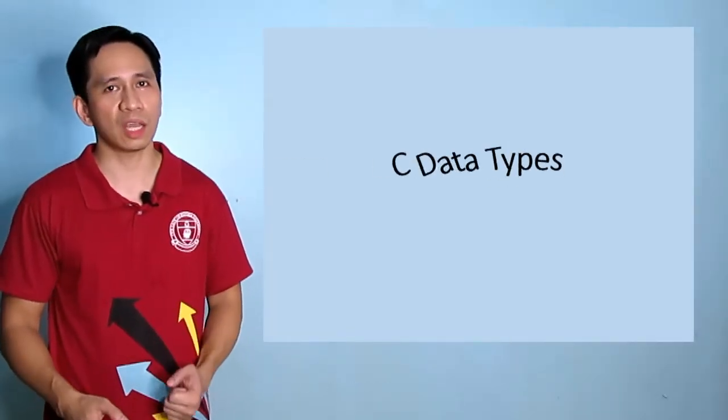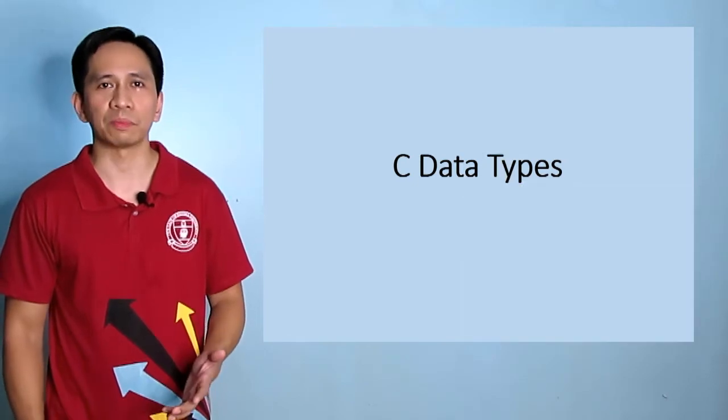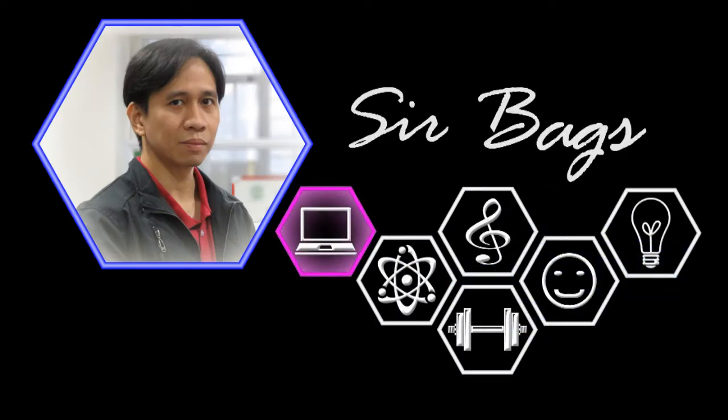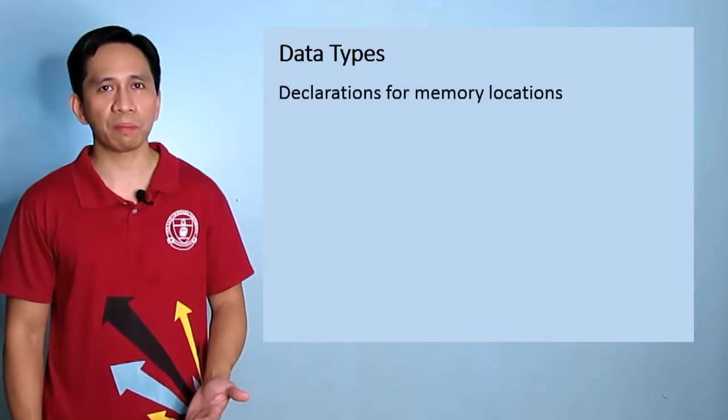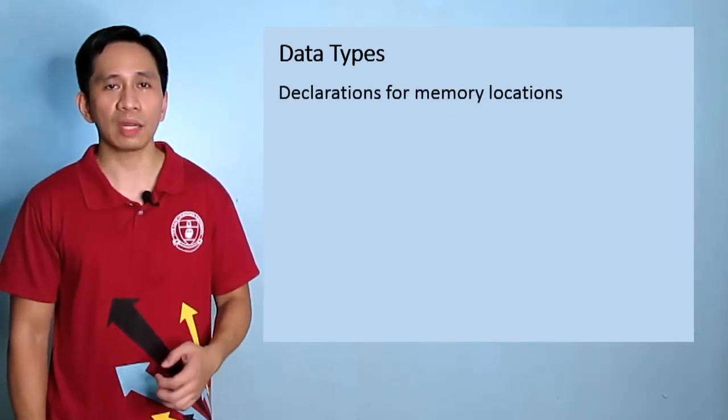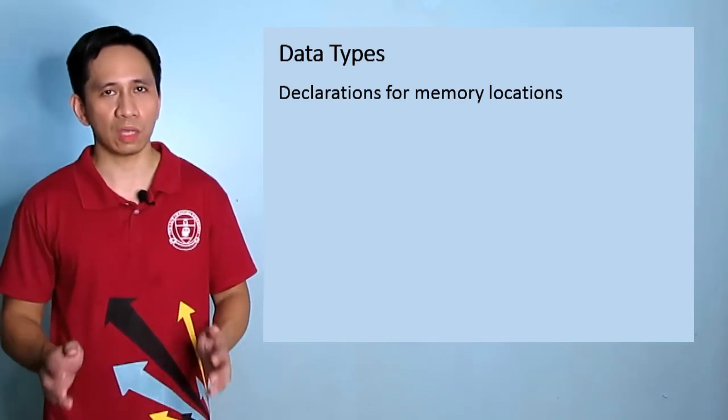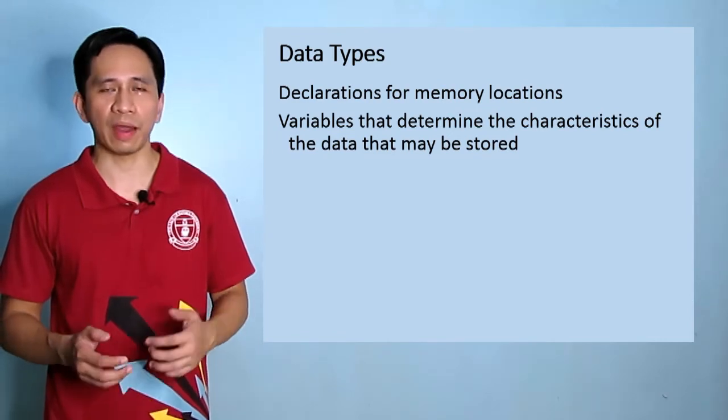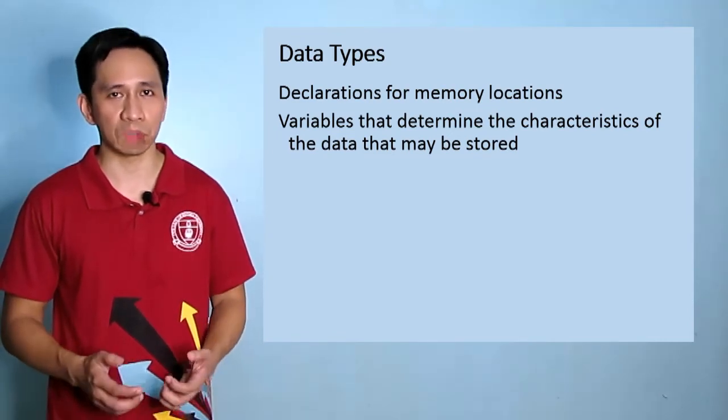What's up guys! Welcome back to another lesson, this time about C data types. So what are data types? Data types are declarations for memory locations. It's your application's way of telling the operating system to reserve space in the RAM. They act as variables that determine the characteristics of data that may be stored.